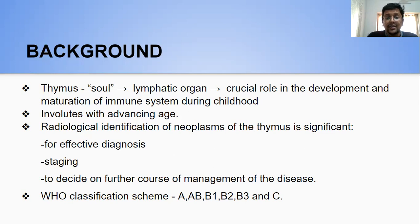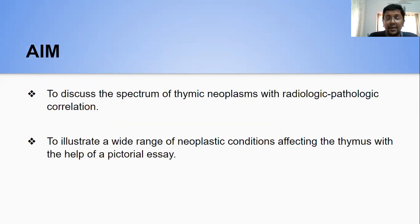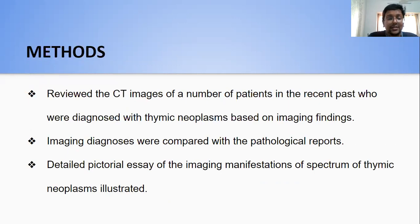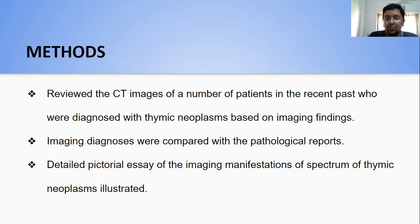Of these, types A, AB, and B1 were the low-risk category, and B2, B3, and C belonged to the high-risk category. The aim of my study was to discuss the spectrum of thymic neoplasms with radiologic-pathological correlation, and to illustrate a wide range of neoplastic conditions affecting the thymus with the help of a pictorial essay. The methods used included reviewing CT images of patients diagnosed with thymic neoplasms based on imaging findings, comparing those with pathological reports, and compiling a detailed pictorial essay of the imaging manifestations.